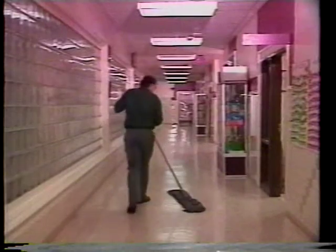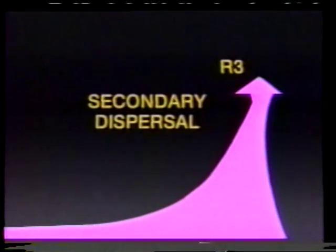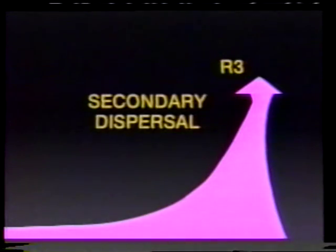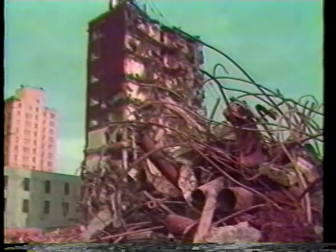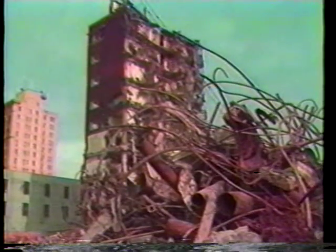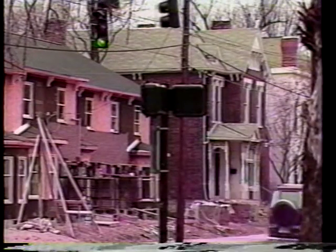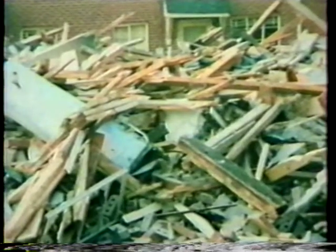Remember that chart we showed you? Well, rate 3 refers to fibers that become airborne as a result of improper cleaning activities. Renovation activities and building demolition can also cause significant fiber release if not performed properly. Federal agencies, including the U.S. EPA, have laws requiring that asbestos-containing materials be removed properly before a building is demolished.